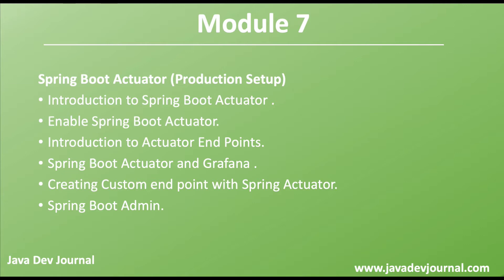Module 7 will talk about production-ready features. Deploying an application is one thing, but once it's on the production environment you want to monitor how the application is behaving — how it reacts to different parameters, how memory usage is going, whether the CPU is working fine, what the caching level is if you're using caching, and how sessions are behaving and how many are currently active.